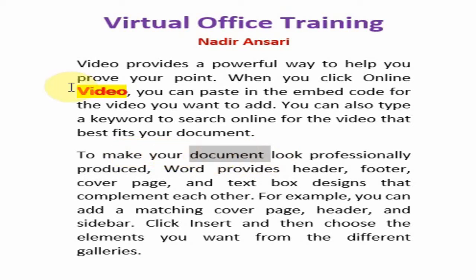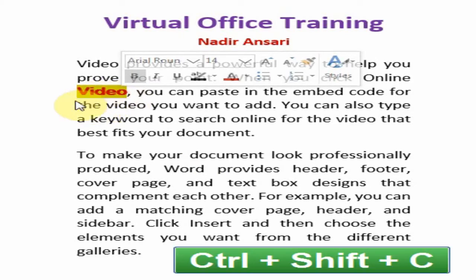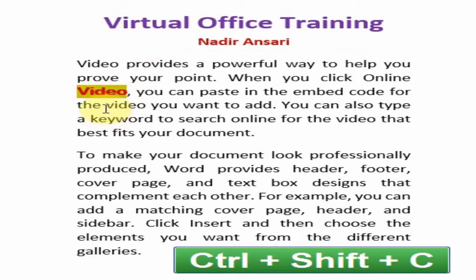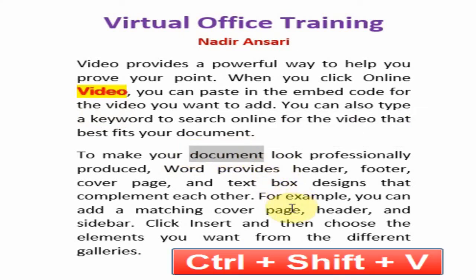First, select the formatted text and press Ctrl+Shift+C — this will copy the format. Now select the text where you want to paste the format and press Ctrl+Shift+V — this will paste the format onto the selected text.